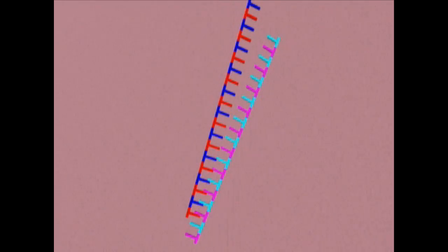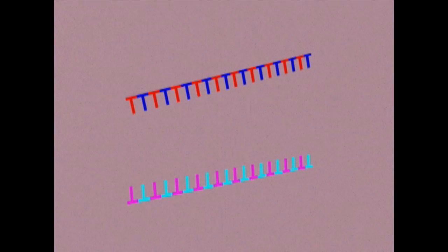First, the original sample, called the template, is heated until the strands separate. This is called denaturation.